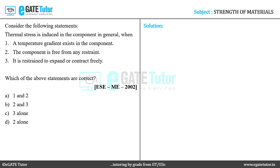Let's look at statement 2. The component is free from any restraint. When any component is free from a restraint or a constraint, the component can expand or contract easily. Therefore in this case, thermal stresses will not be produced. Therefore statement 2 is also not correct.